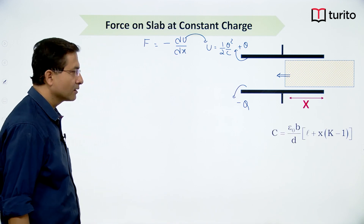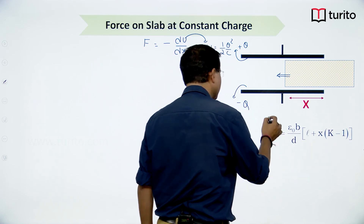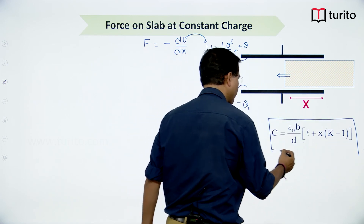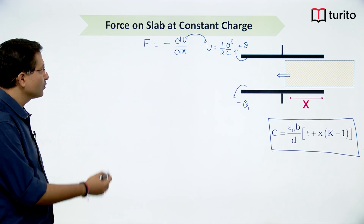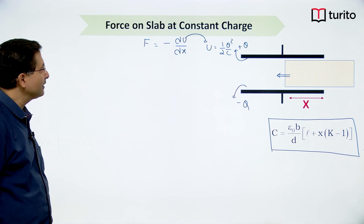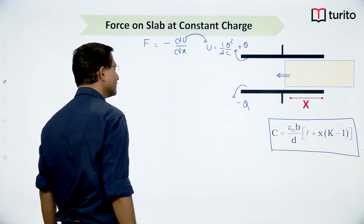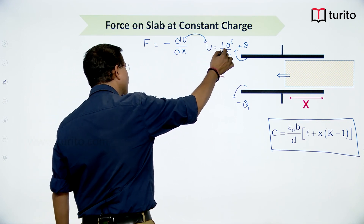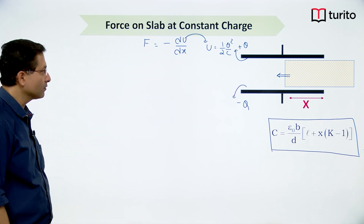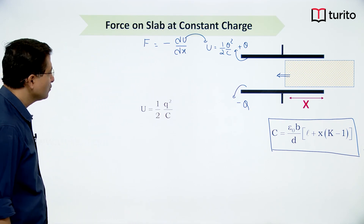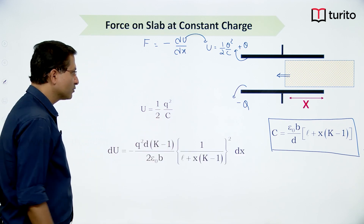The capacitance is the same parallel combination as before: C = ε₀b[l + x(k−1)]/d. To get force I need to differentiate energy. Energy is stored in the capacitor as a function of capacitance, and capacitance is a function of x. So U = ½q²/C, and substituting the value of capacitance we get U = q²d / {2ε₀b[l + x(k−1)]}.